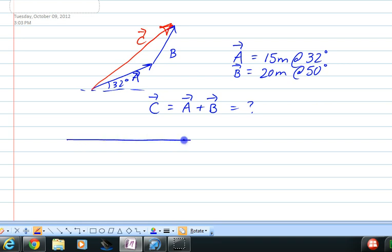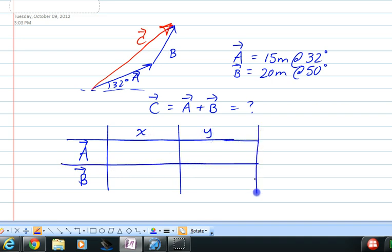And like previously, we write the vectors. So there's A and B and they have an x and a y component.